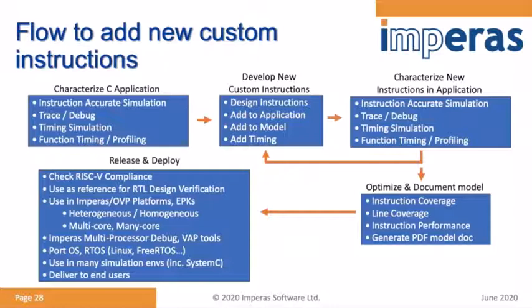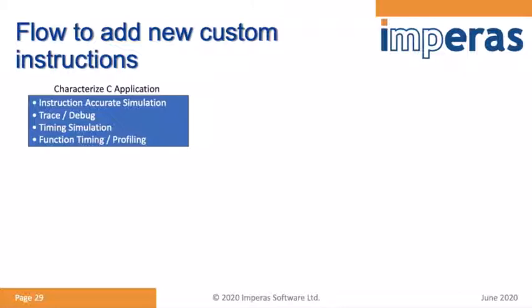The balance is to find a fine-grained instruction that still gives software flexibility. You take the code through modeling, analyze and profile, and this ultimately becomes your reference model — helping with software development and verification of the RTL. You'd begin by using instruction-accurate simulation debug and trace to make sure your C application is as optimized as possible on the standard architecture.